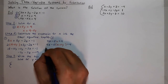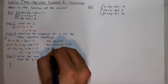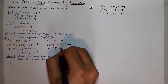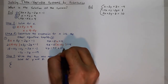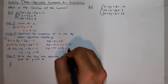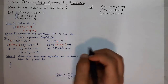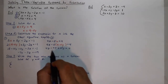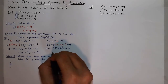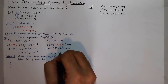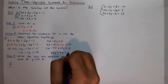Distributing the negative 5, I'll get 4z minus 45 plus 25y is equal to 4. Adding 45 to the right side, I'll get 25y plus 4z is equal to 49.